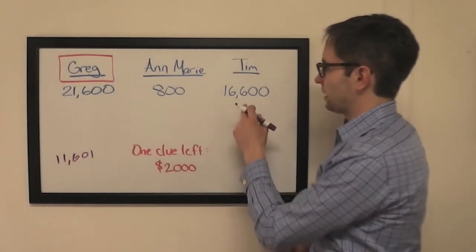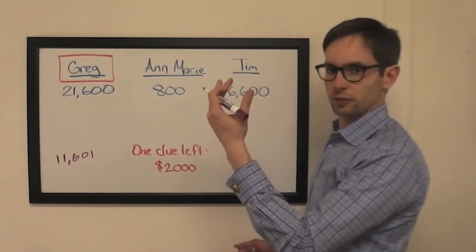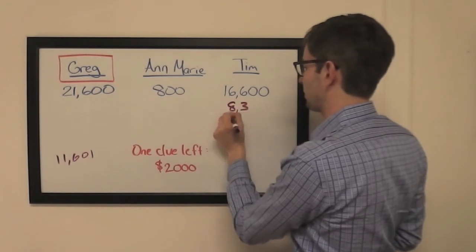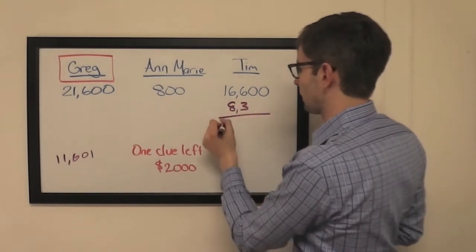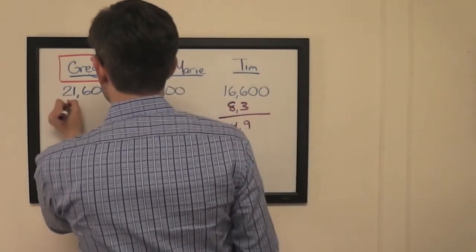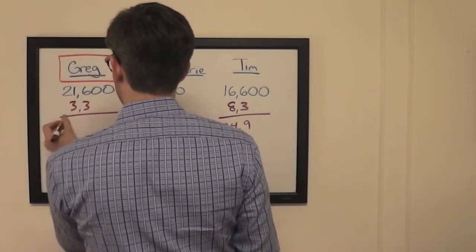The way we calculate that is by taking half of Tim's score and then adding that to his present score. That'll be one and a half times. So half his score is $8,300. Adding that to his total right now, $24,900. That's going to be a wager of $3,300 out of Greg.